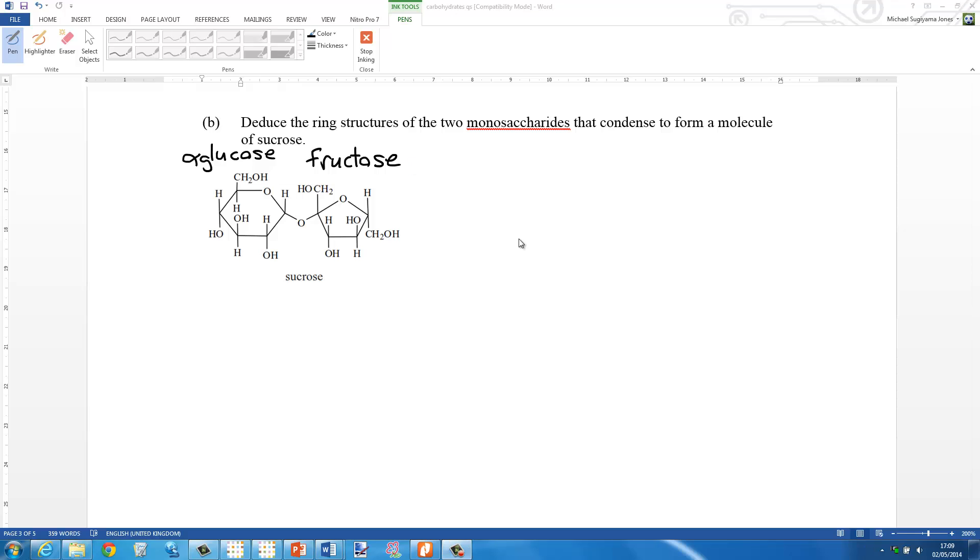And you can deduce the structures of the two monosaccharides that make up the disaccharide. Don't forget, it's a condensation reaction with a loss of a water molecule. So now I'm doing the structure of alpha glucose. The OH groups are on the same side of the ring structure, so it's the alpha isomer. The beta, they'd be on the opposite sides of the ring structure.